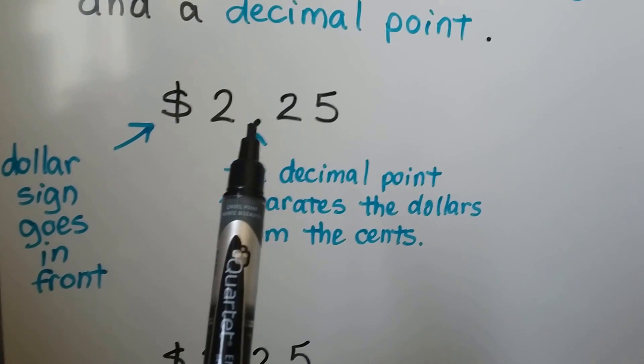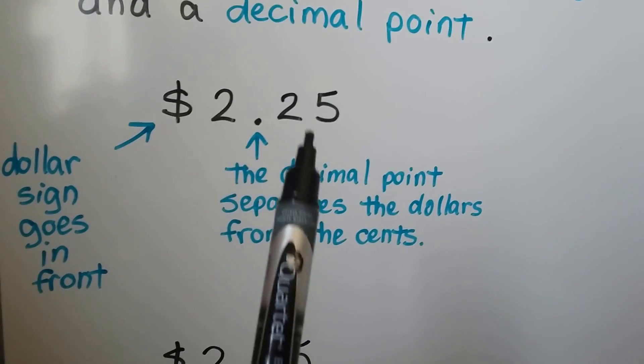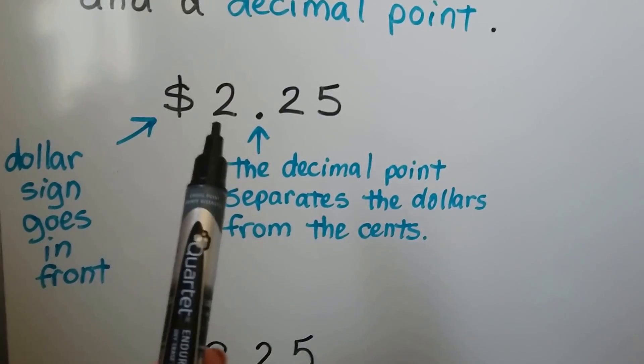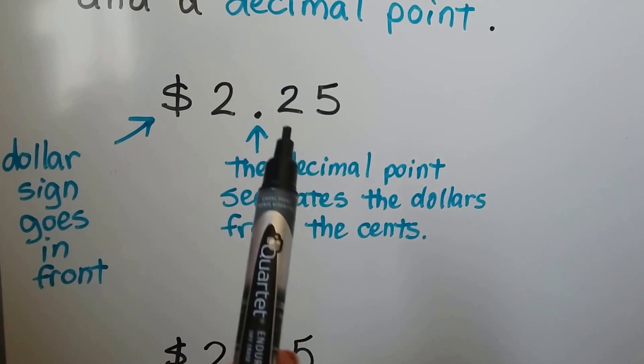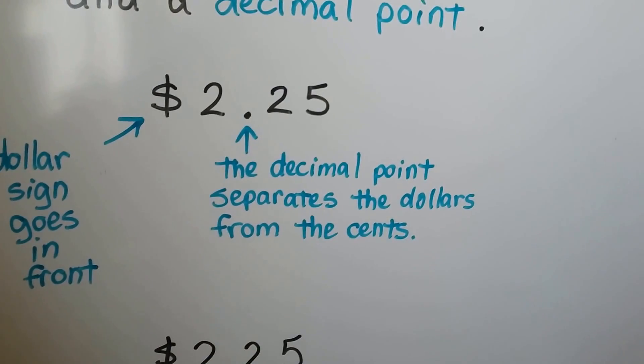This decimal point separates the dollars from the cents. The numbers on the left of the decimal point are the dollars. The numbers on the right of the decimal point are the cents.